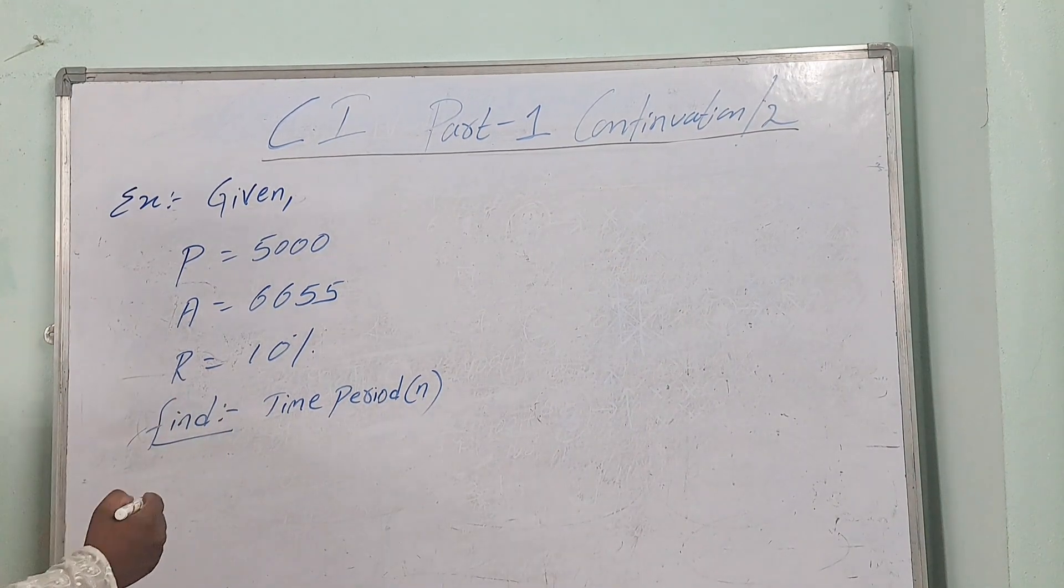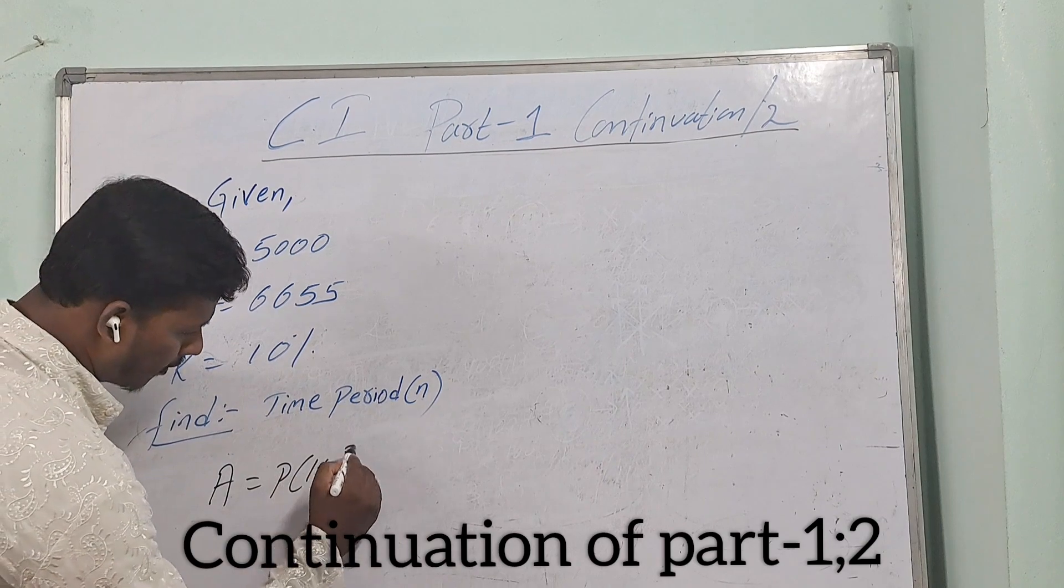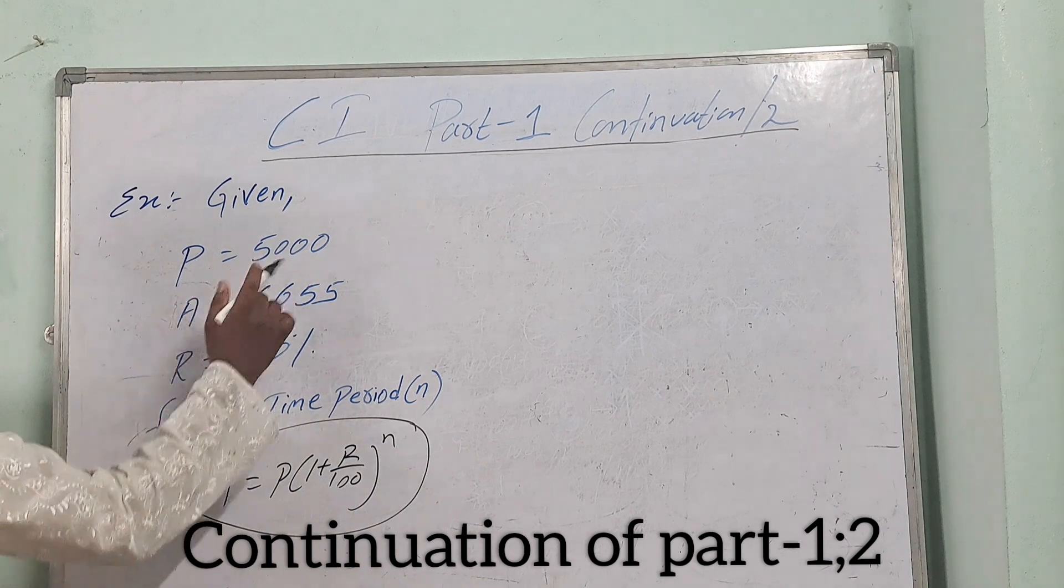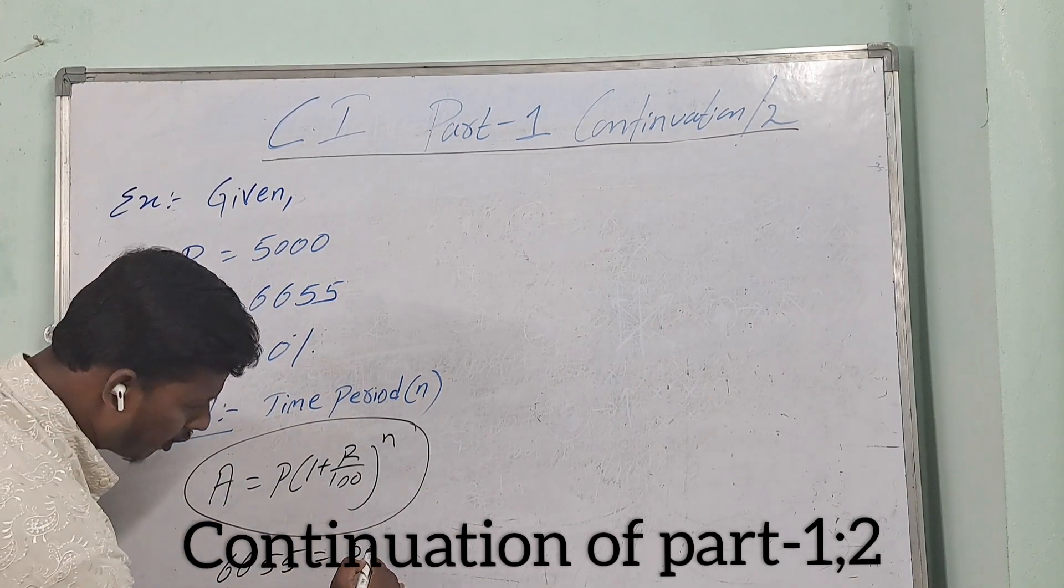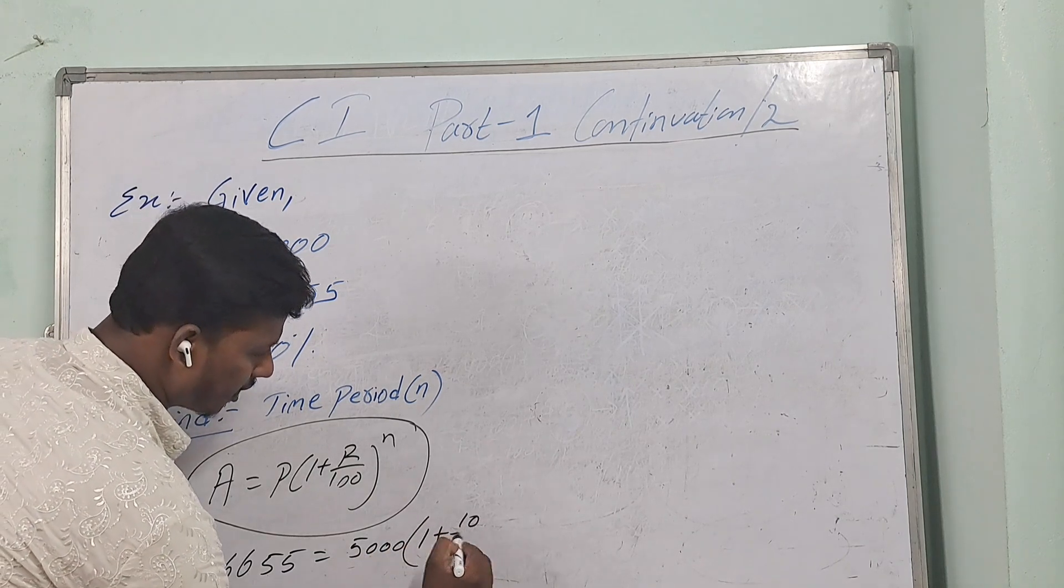Now, the same formula we have to take: A is equal to P of 1 plus r by 100 whole to the power of n. We have to substitute the values. A is equal to 6655, principal value is 5000 of 1 plus r, the rate of interest that is 10 by 100, whole to the power of n. We have to find n.